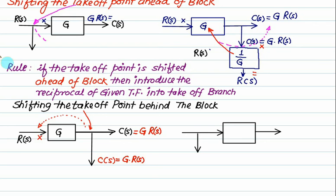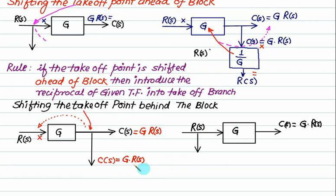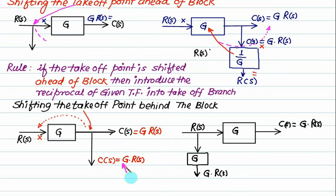We have not made any change in the incoming branch, so I will write here R of S. This one is same as G. Is my value of C of S still equals to G into R of S? Right now, what is my takeoff value? It is R of S. But what is my original takeoff value? It is G into R of S. So what we should do is introduce a block equal to G. Then the value here equals G multiplied by R of S. So the original value and the final value are the same, and modification is permitted.